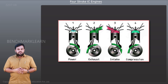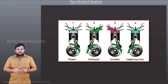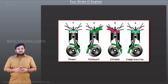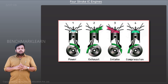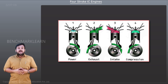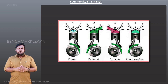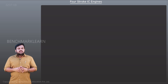Four-stroke IC engines are the most common engines we see today. They differ from two-stroke IC engines in that they complete one cycle with four strokes of the piston. In other words, to obtain one power stroke during one cycle, the piston has to complete four strokes. Four-stroke IC engines are of two types: SI and CI engines.